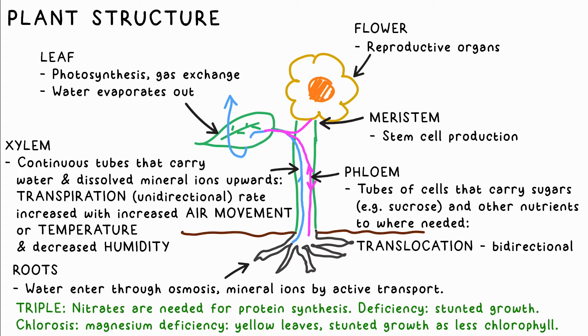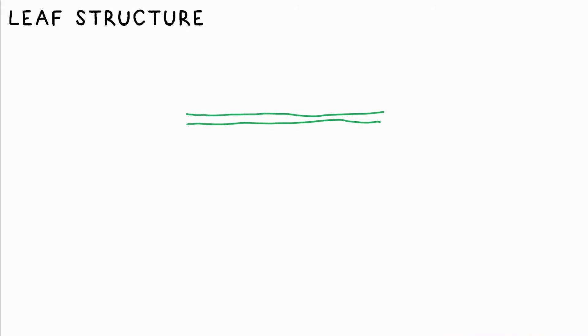Chlorosis is the scientific term for the yellowing of leaves. This can be due to magnesium deficiency, as magnesium is needed to make chlorophyll. The cross-section of a leaf has several distinct layers, each with its own specific function.